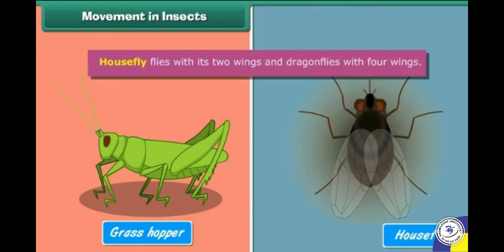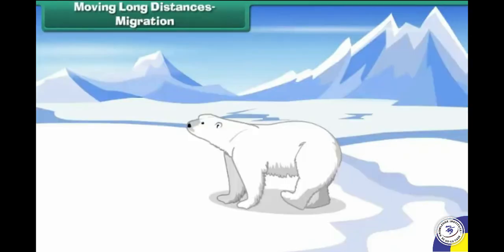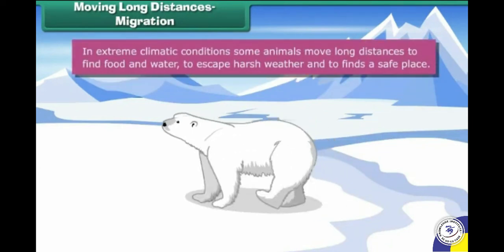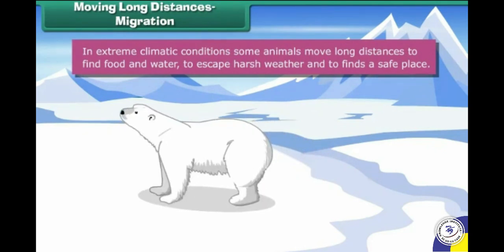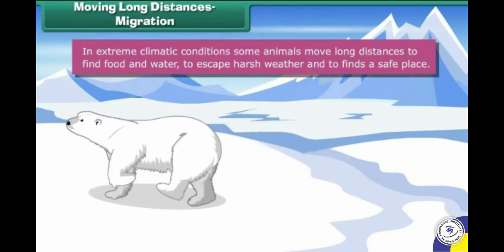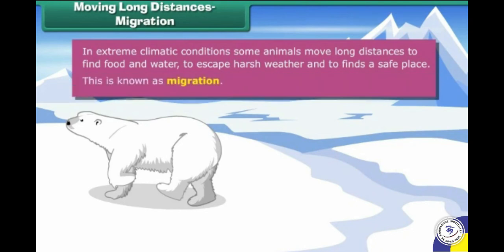Many insects have wings and can therefore fly. The housefly flies with two wings and dragonflies with four wings. Moving long distances — migration: in extreme climatic conditions, some animals move long distances to find food and water, to escape harsh weather, and to find a safe place. This is known as migration.